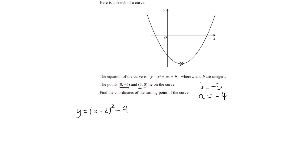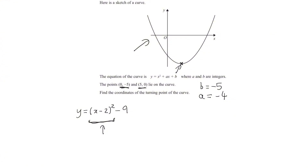Now all we need to do is find the coordinates of the turning point. For a quadratic, the turning point will either be a minimum or a maximum. Looking at this graph we can clearly see that in this case it's going to be a minimum point. So we want to minimize this equation — make the y value as small as possible, as negative as possible. The only thing we can change is x, specifically the term (x − 2) squared.